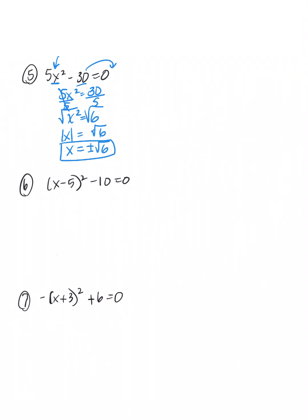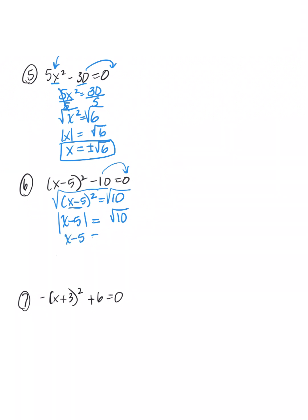Number six looks a little different but we treat it the same way. Move the 10 over to the right, leaving the (x minus 5) squared as a unit — just consider it like an x squared. Take the square root; (x minus 5) comes out within absolute value bars. The right side is square root of 10, which doesn't simplify. Get rid of absolute value bars using plus or minus √10. Now x is not by itself — move the minus 5 over by adding, giving x equals 5 plus or minus √10. The radical portion always ends up at the back.